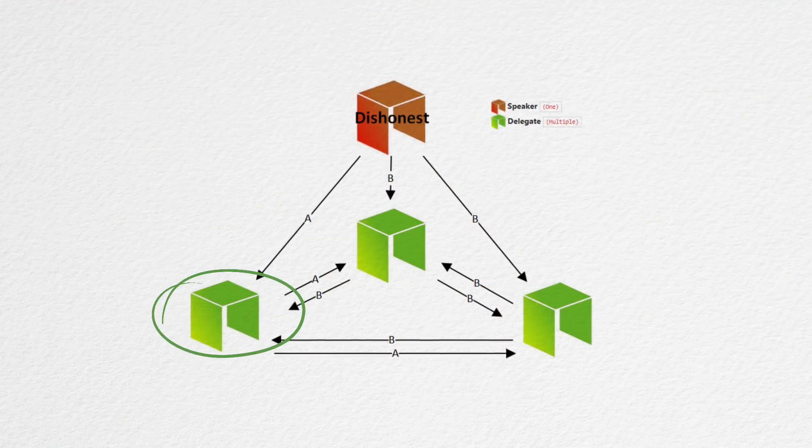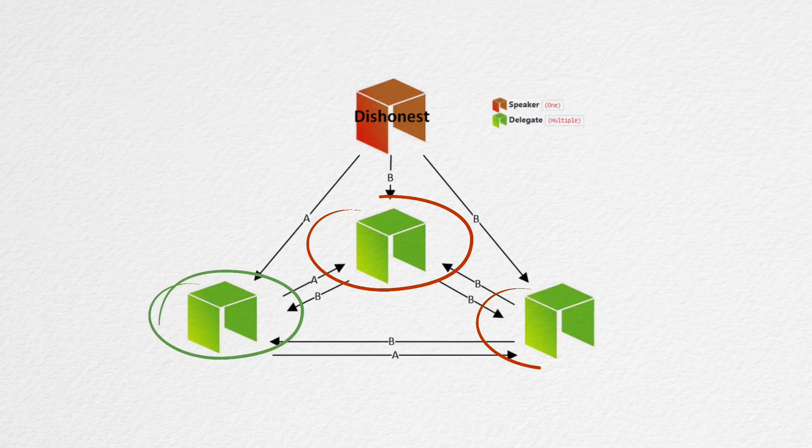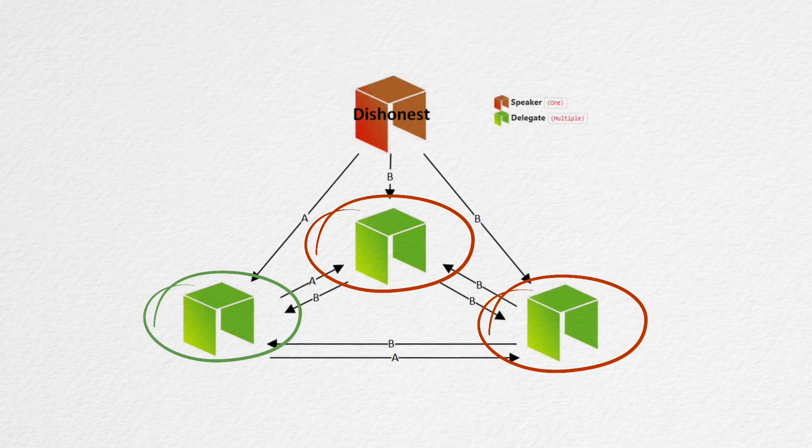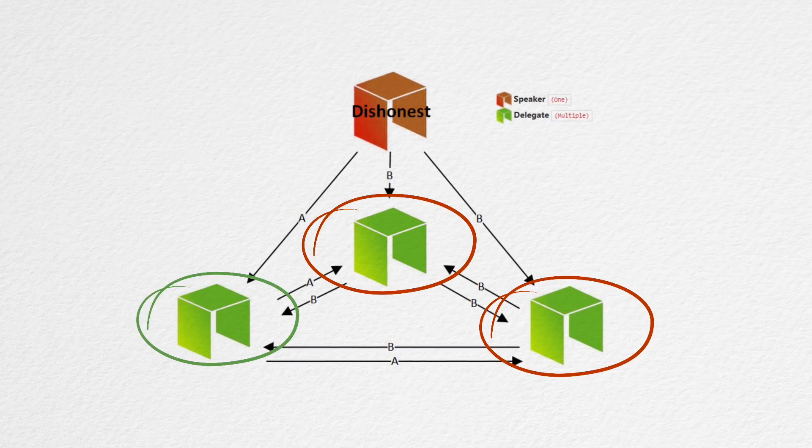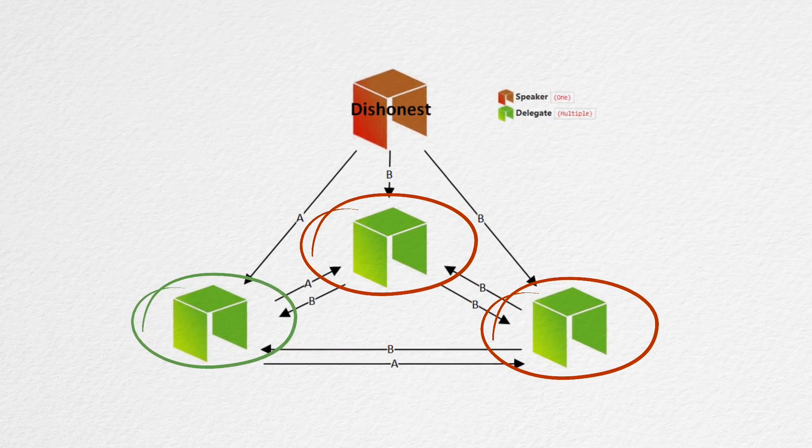For example, you have a dishonest speaker who sends correct info A to one delegate and wrong info B to others. The middle delegate and the right delegate would not calculate the same consensus as a dishonest speaker and cannot verify the transactions. The left delegate who received accurate information A would confirm, resulting in just one confirmation. The proposal would be rejected because it didn't get 66% consensus.